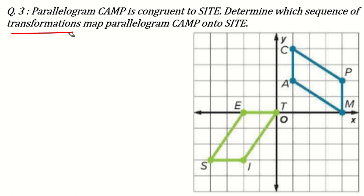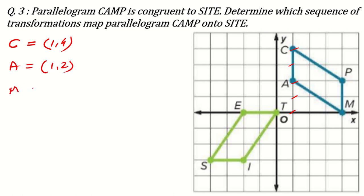If it is a multiple choice question, then with the choices only you can work through it. But if it is an open response question, then there are various ways to solve it. What are the coordinates of CAMP? Coordinate of C is 1, 4. Coordinate of A is 1, 2. Coordinate of M is 4, 0. Coordinate of P is 4, 2.